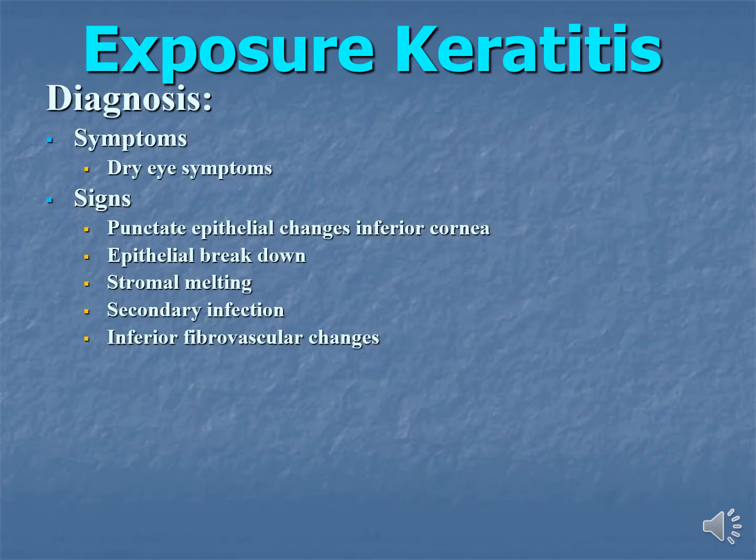For diagnosis, the patient usually has symptoms of dry eye. As far as signs are concerned, initially there are punctate epithelial changes, usually in the inferior cornea, as this part is mostly exposed due to non-closure of the lids. Then epithelial breakdown occurs, and ultimately stromal melting and secondary infection cause ulceration. Inferior fibrovascular changes may also be present.